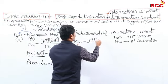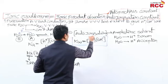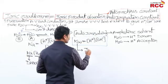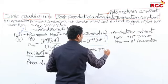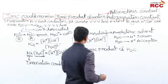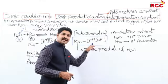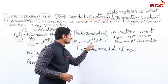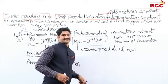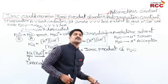This new constant is called Kw. Kw is called the ionic product of water. It is the product of the two ions — H⁺ and OH⁻ — both coming from water. So Kw = [H⁺][OH⁻].